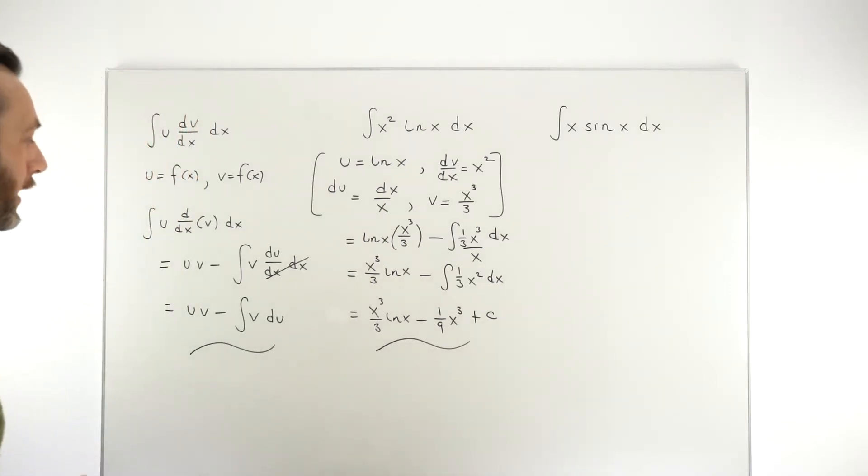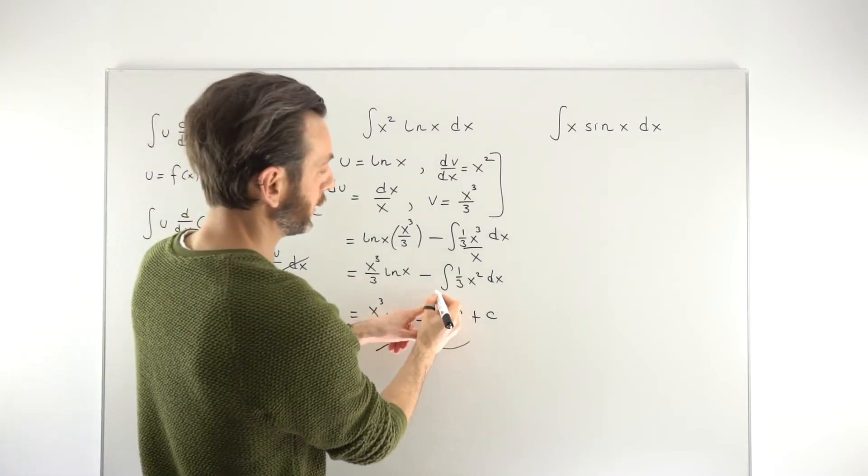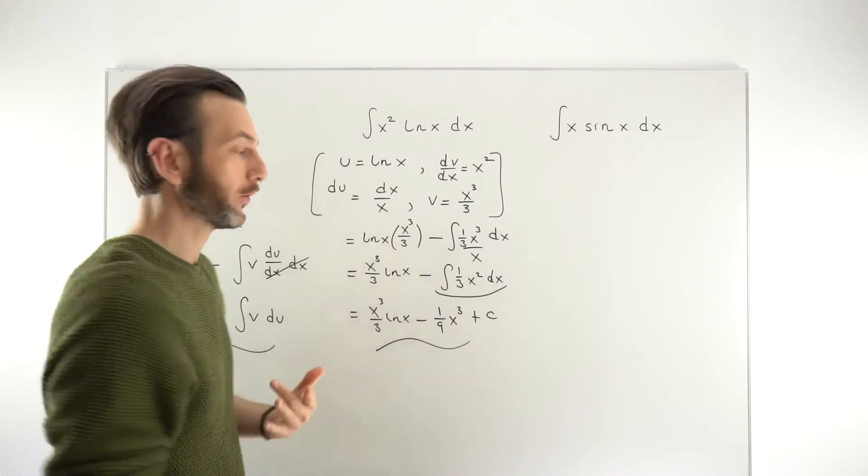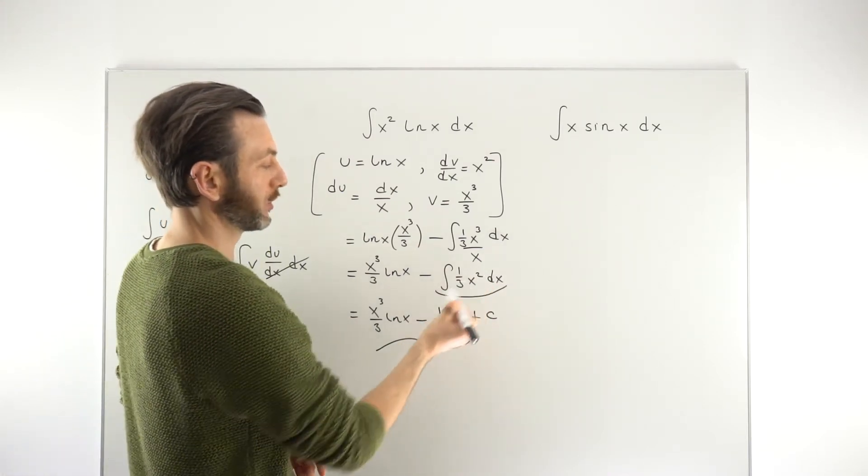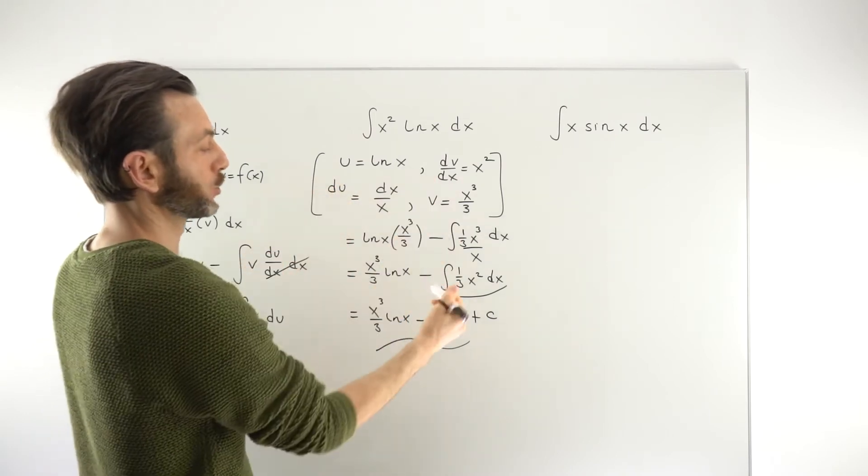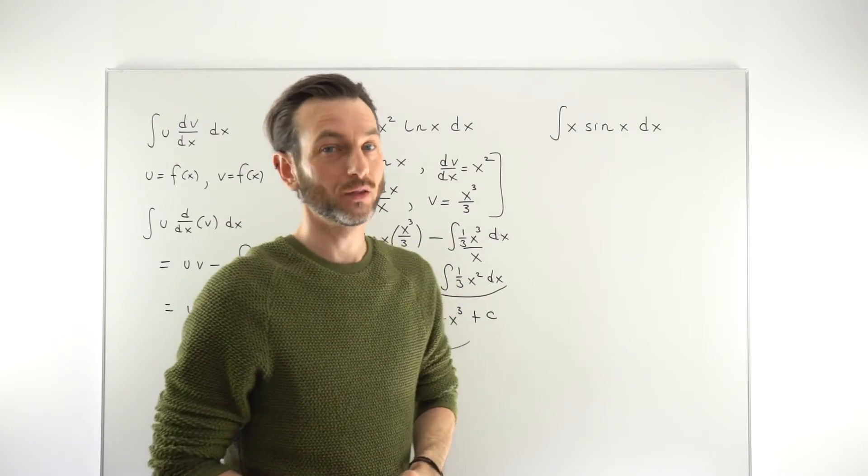One of the other things that quite often happens in these questions is when you get to this stage here and you go to integrate this guy, even though you've not done anything wrong, you'll find that this won't be in an integratable form. So it's not necessarily because you've made a poor choice here. It's just because sometimes you need to run integration by parts twice. In other words,